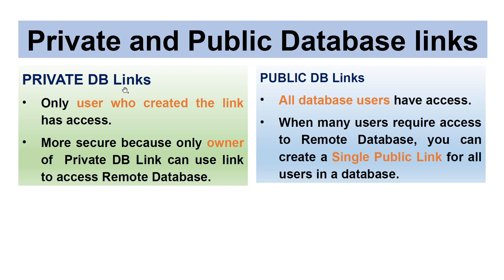There are two types of DB links: private and public. For a private DB link, only the user who created the link has access — it is more secure because only the owner can use it to access the remote database. For a public DB link, all database users have access. When many users require access to the remote database, you can create a single public link for all users.